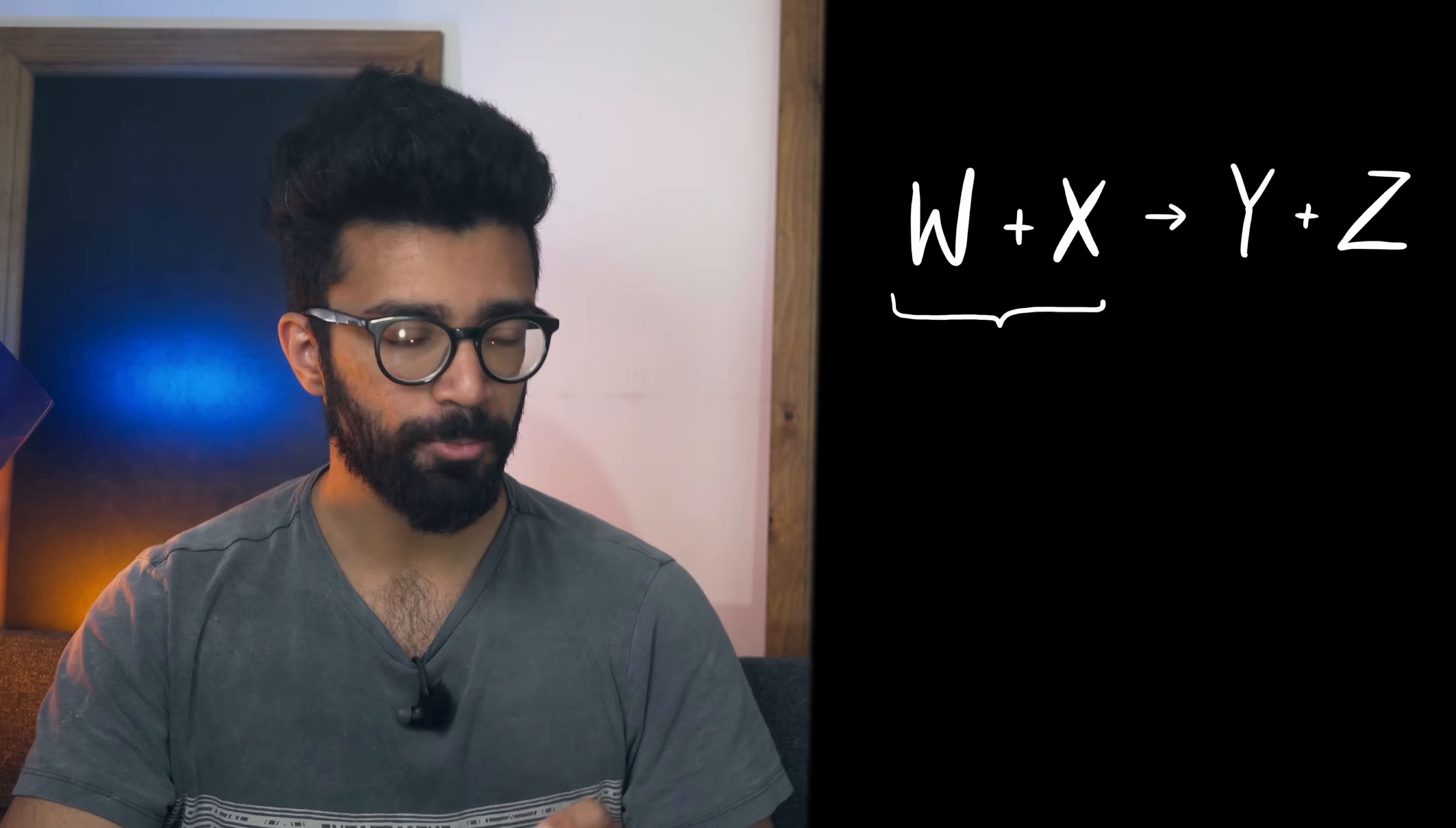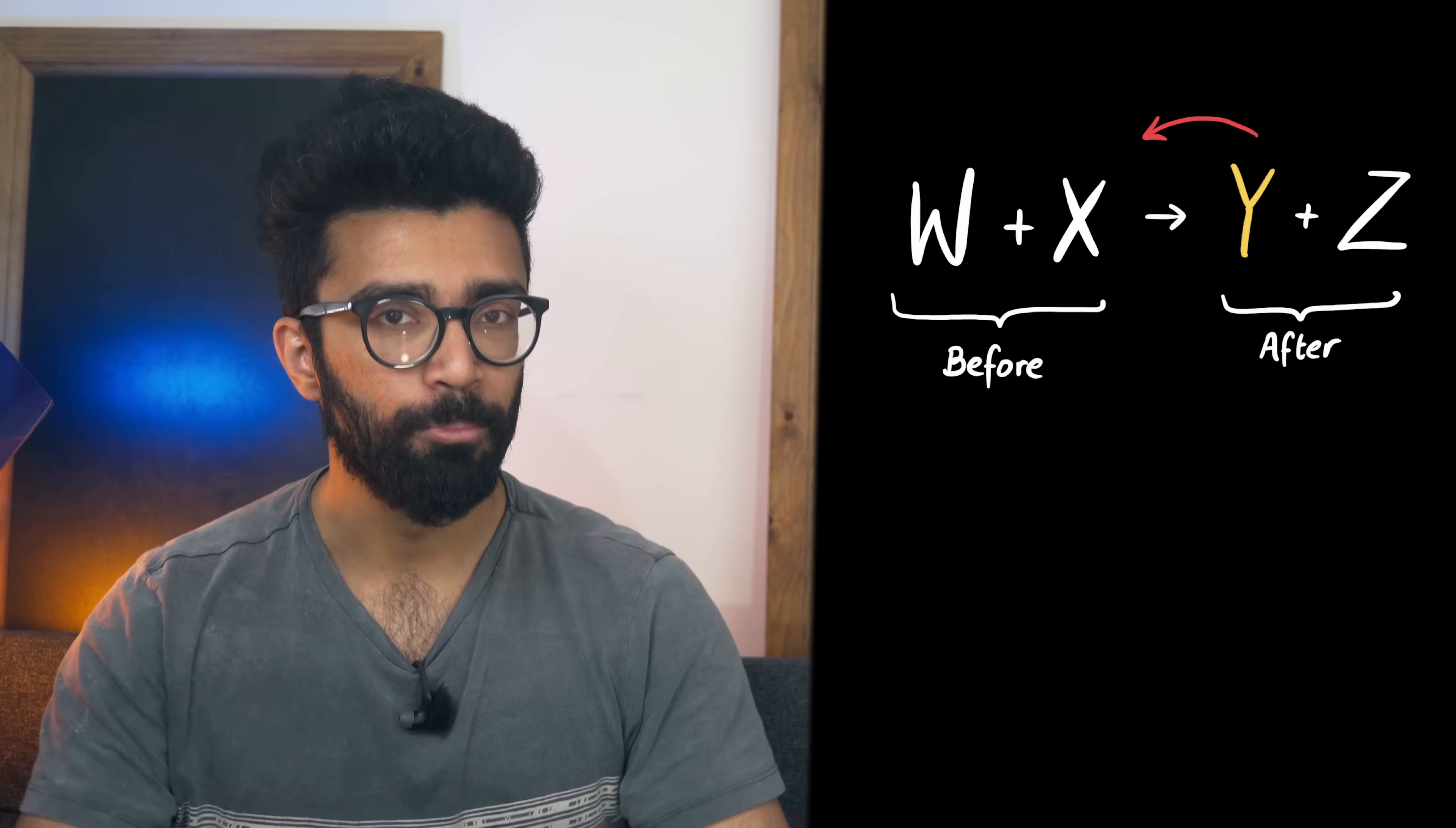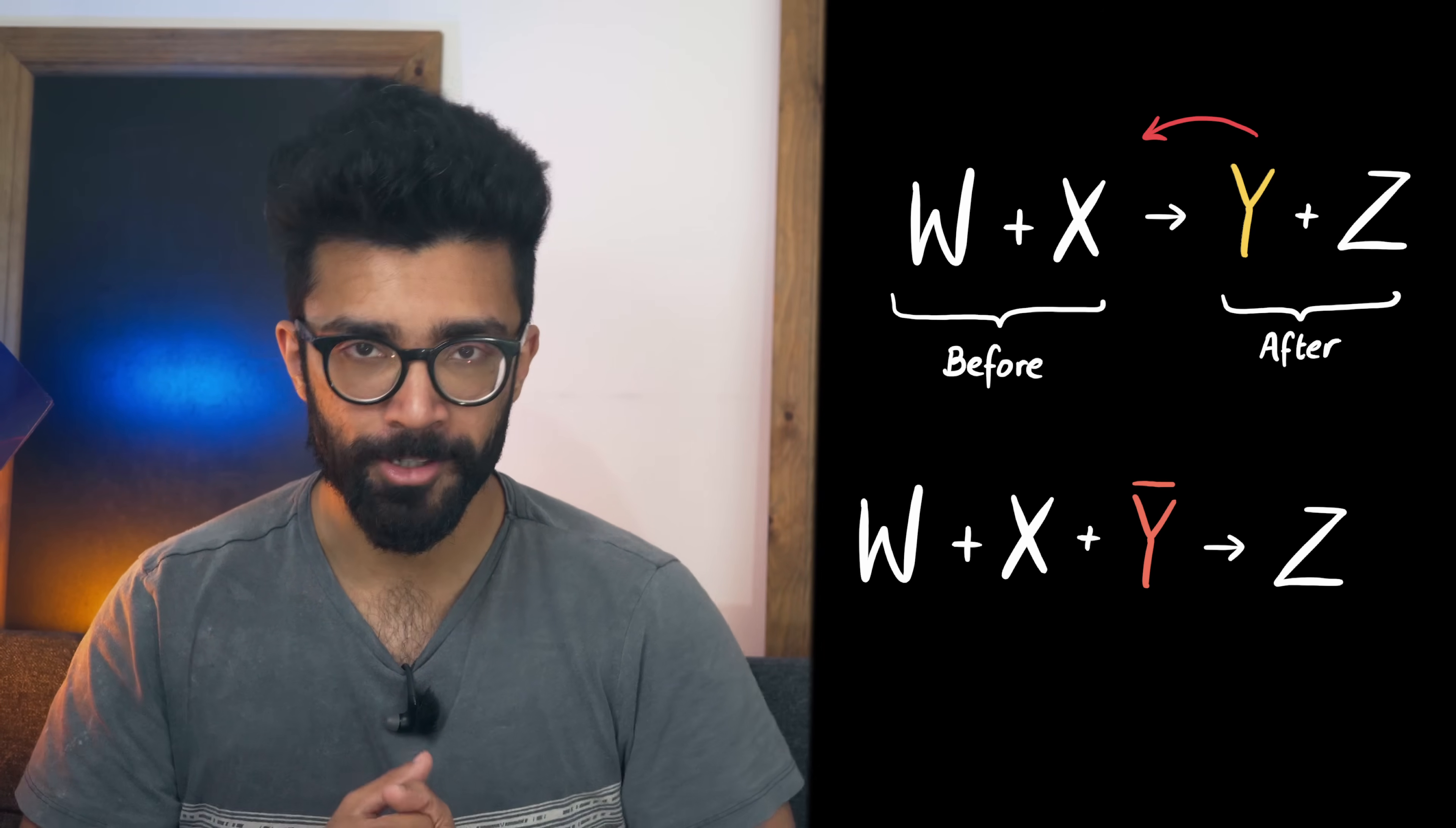So if we take a particle from the right, the after side, and use crossing symmetry to move it to the left, the before side, remembering that we have to switch to its antiparticle, we can then say that the antiparticle of this original particle can be considered as moving backwards in time relative to the original particle.